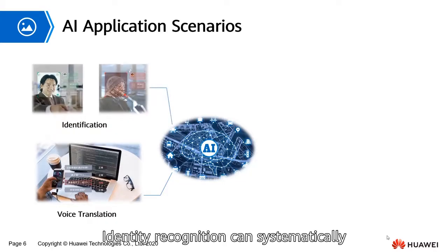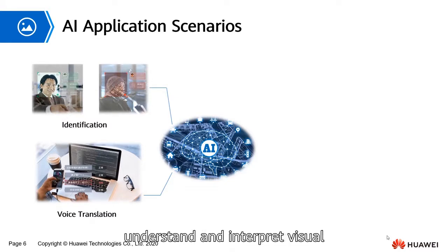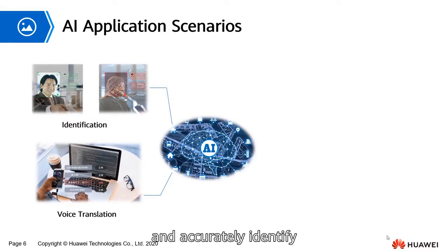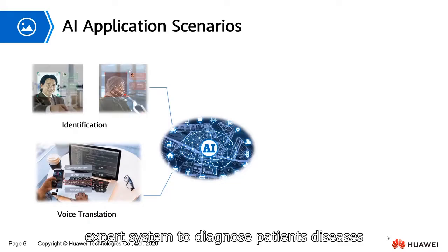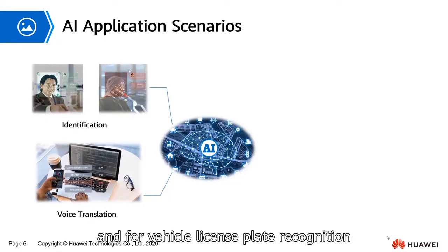Identity recognition can systematically understand and interpret visual input on a computer and accurately identify abnormal people through learning. It can also be used in the clinical expert system to diagnose patients' diseases and for vehicle license plate recognition.